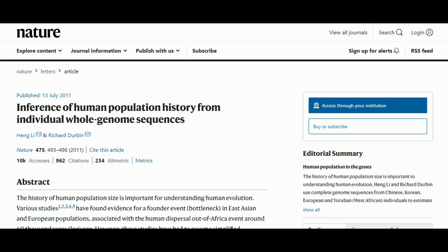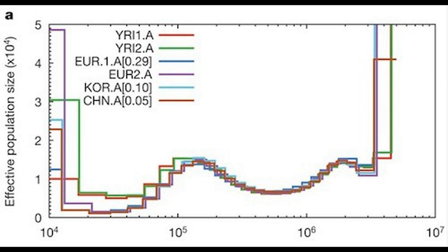Li and Durbin found that when comparing the genomes of a grand total of seven individuals — one Chinese male, one Korean male, three European individuals, and two Yoruba males (an ethnic group from Western Africa) — a very interesting pattern appeared. The Yoruba genomes indicate a split from the non-Africans at about 110,000 years ago, and the non-African genomes point to a major bottleneck upwards of 60,000 years ago, both of which match the archaeological data pretty closely. Since this method approximates the number of individuals in a population based on the rate of coalescences, it pretty conclusively demonstrates that the human species never dropped below a few thousand individuals in the past million years.